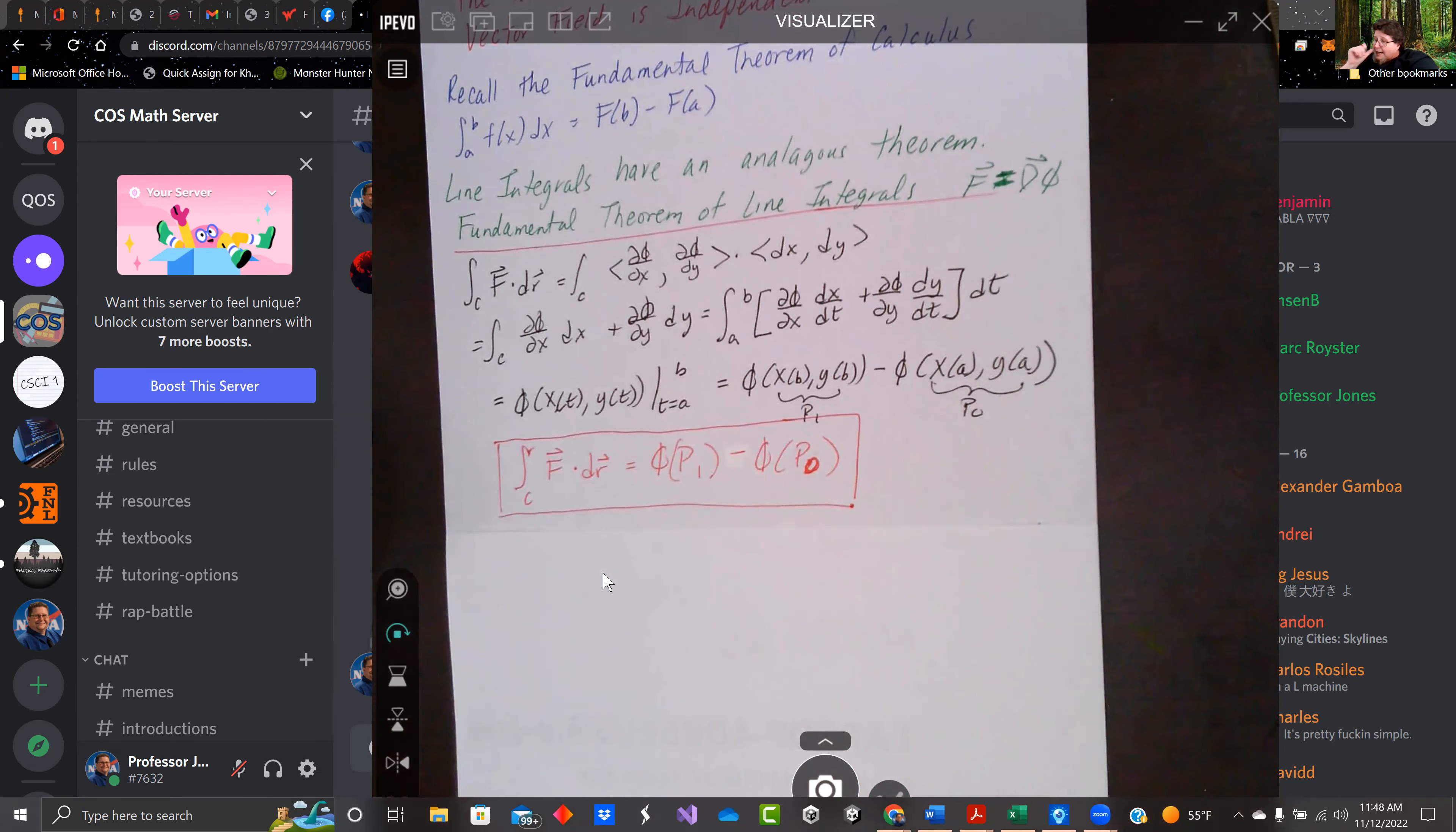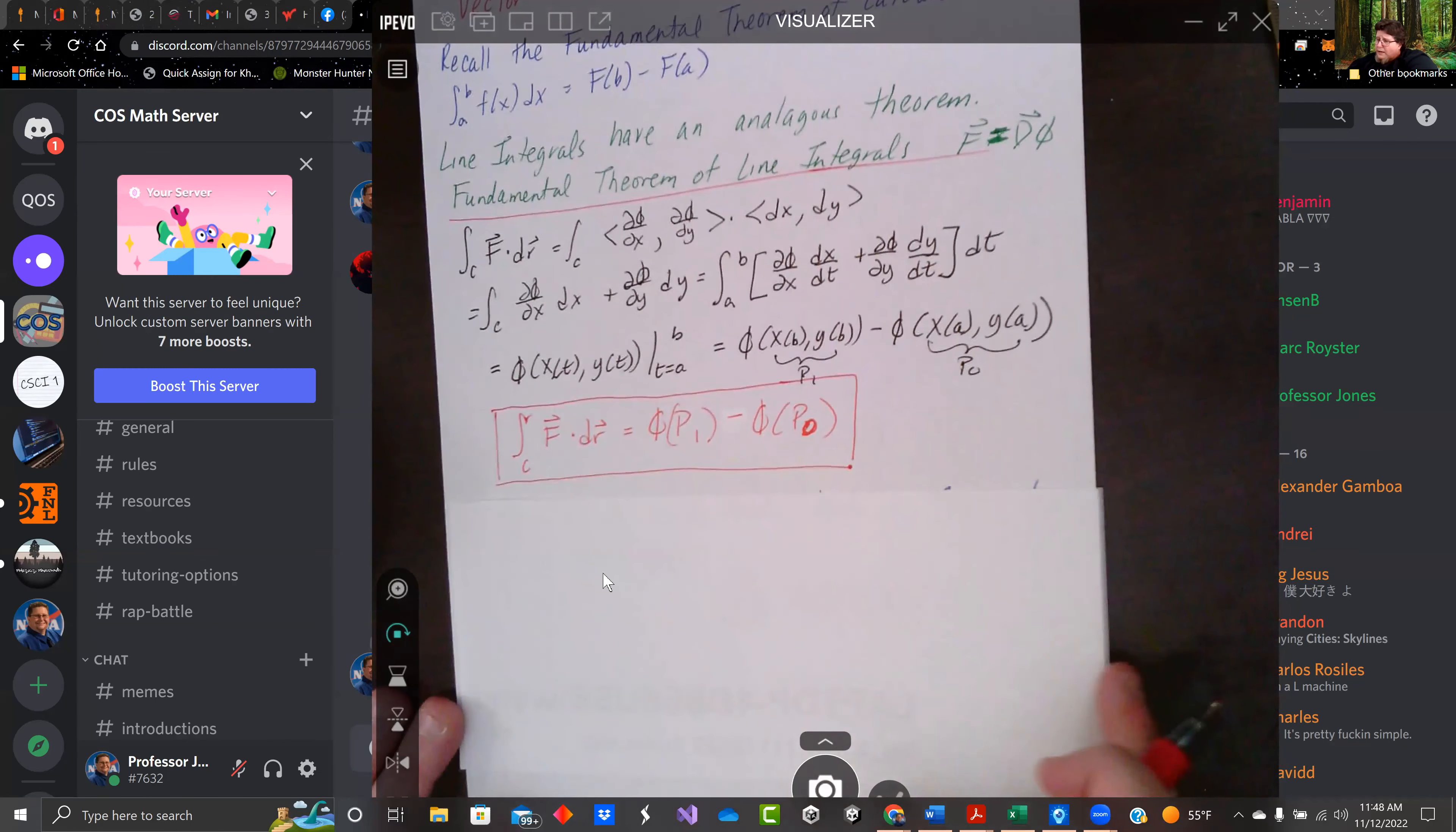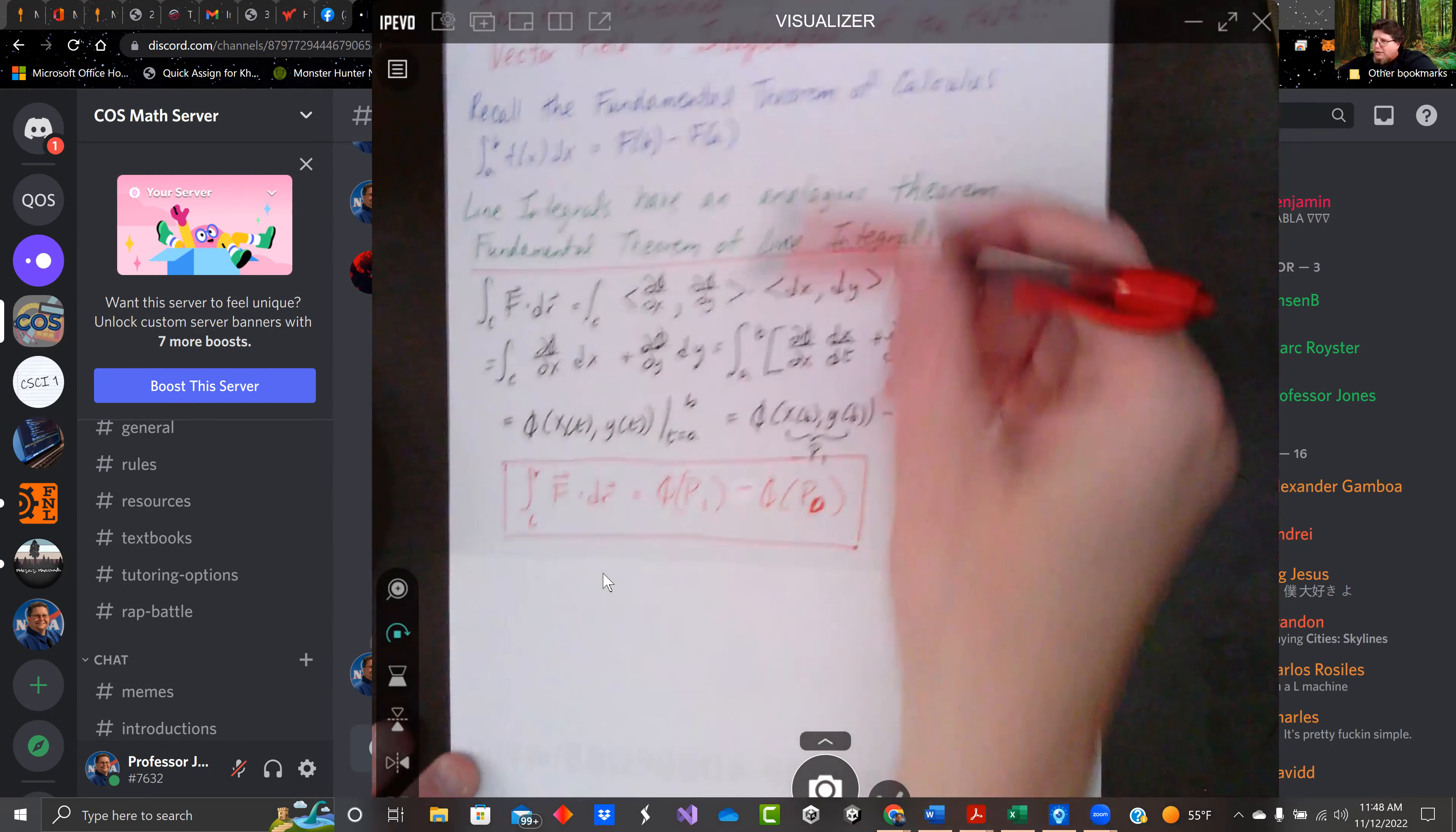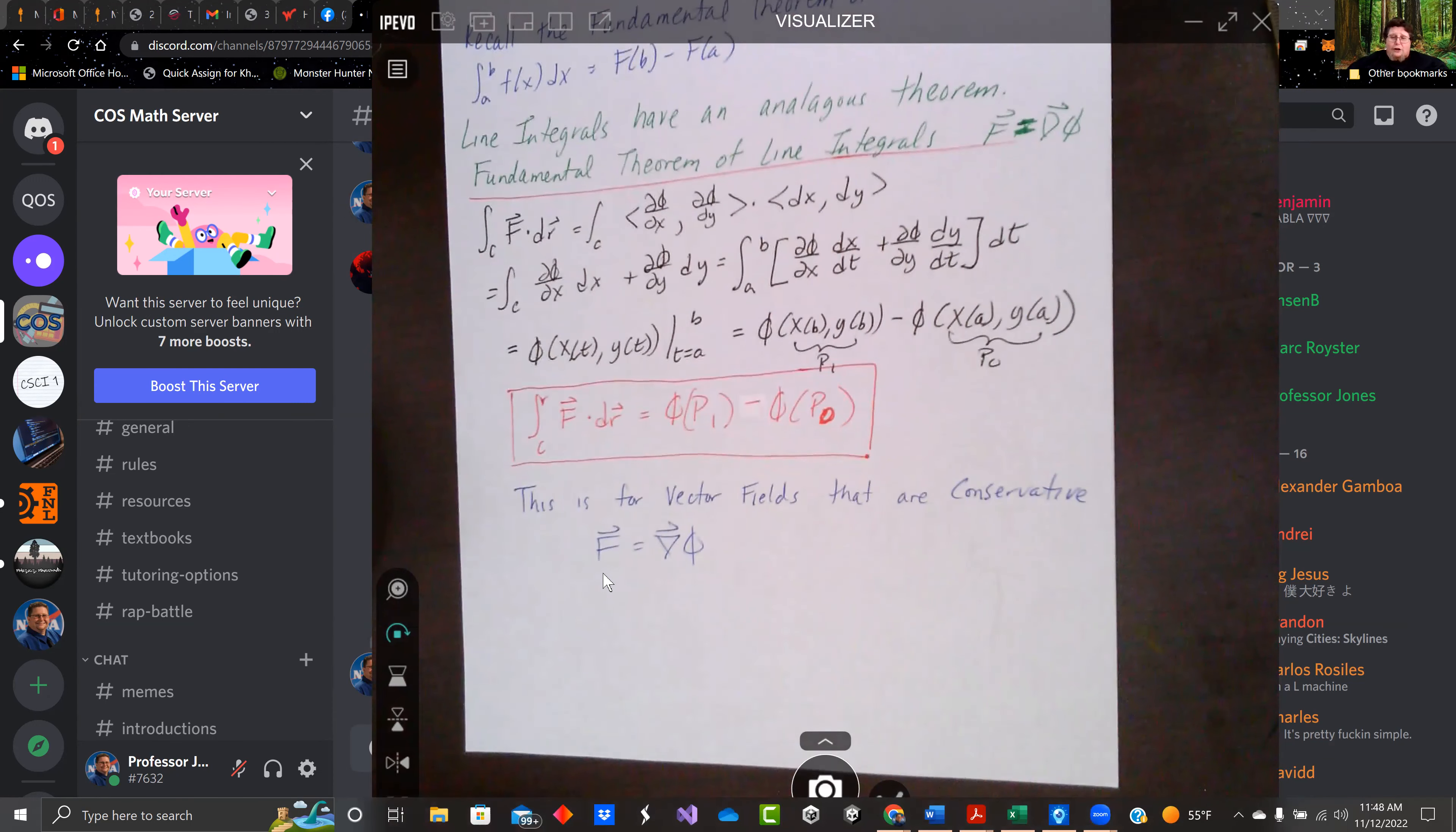So we got the line integral f dot dr in a conservative vector field along a curve is phi of p1 minus phi of p0. So it's kind of like our fundamental theorem of calculus, but this is for line integrals. And again, this is for vector fields that are conservative. So f needs to be a gradient of some potential function.